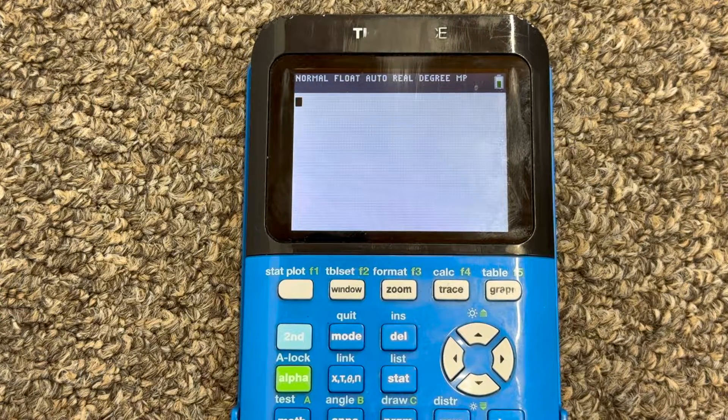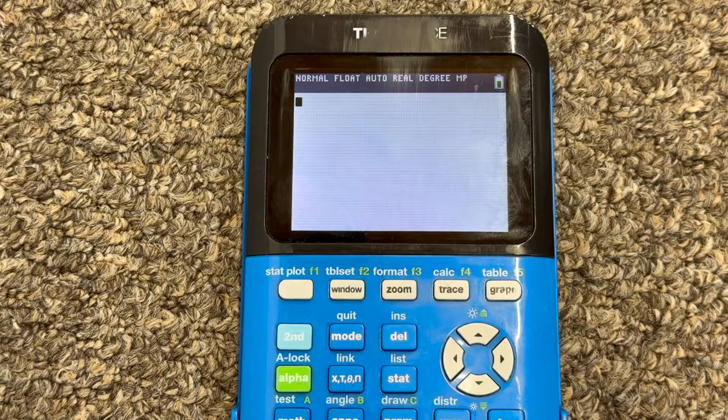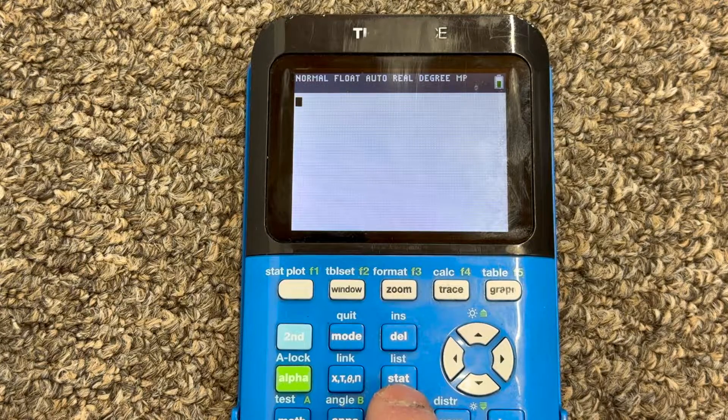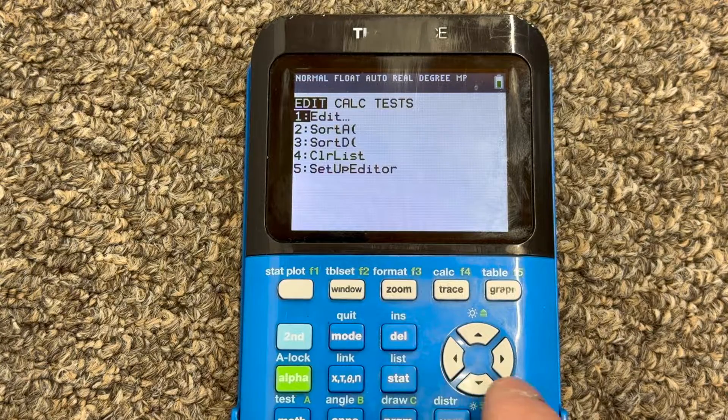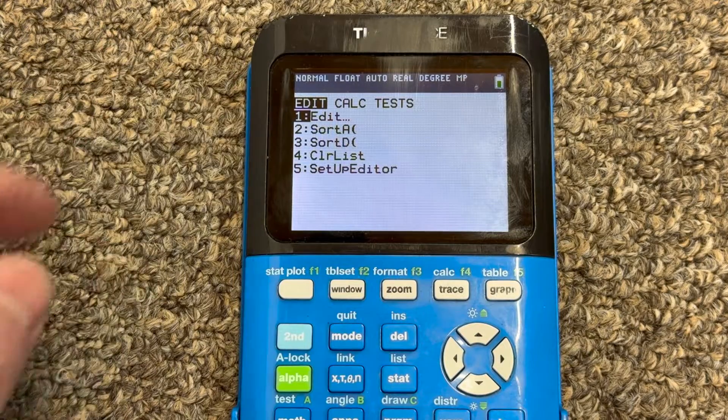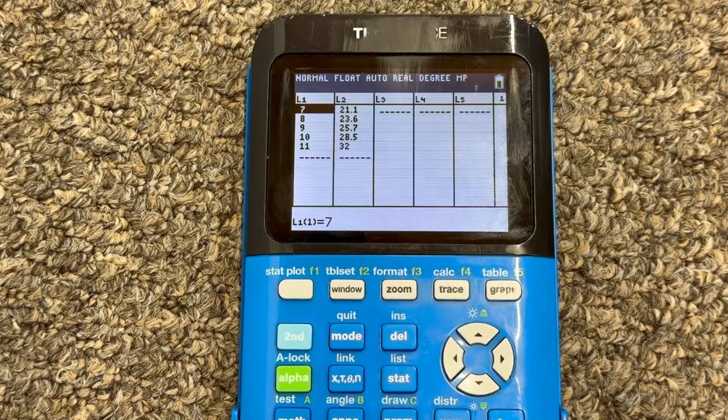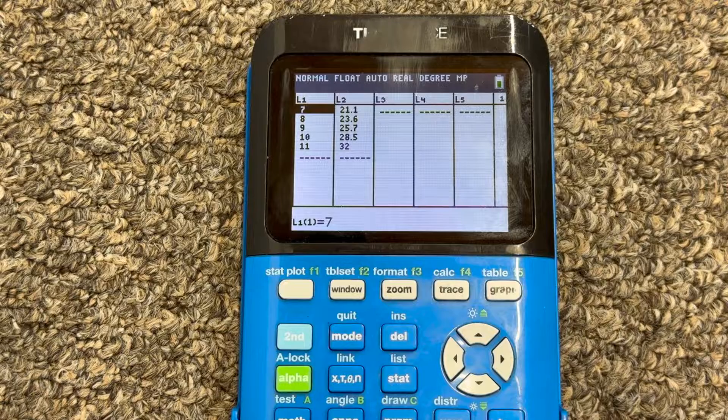What you want to do is first go to where it says stat for statistics, press that button, and then where it says one edit, you're going to press enter, and then you're going to see these lists here, like list one and list two.